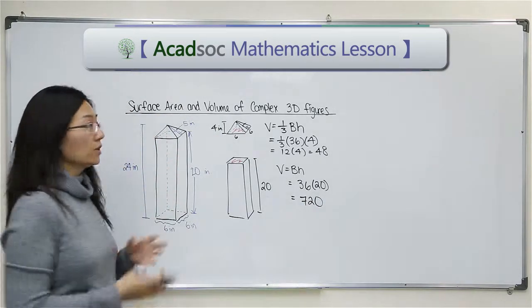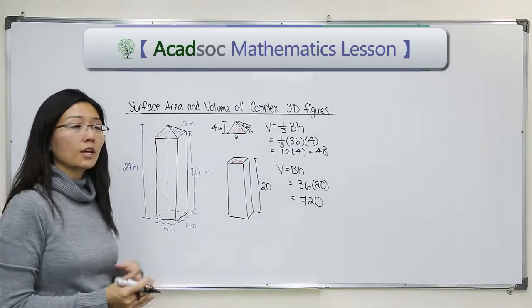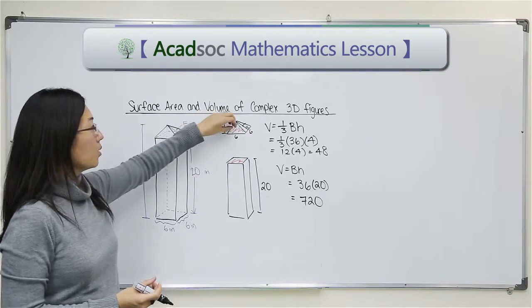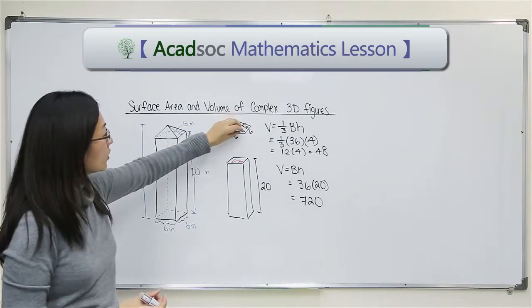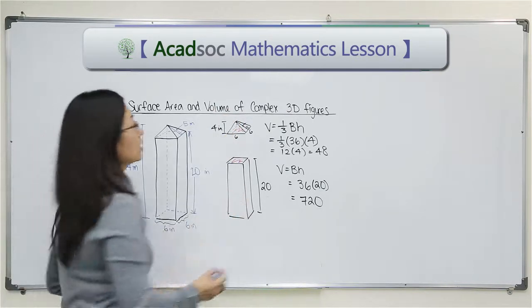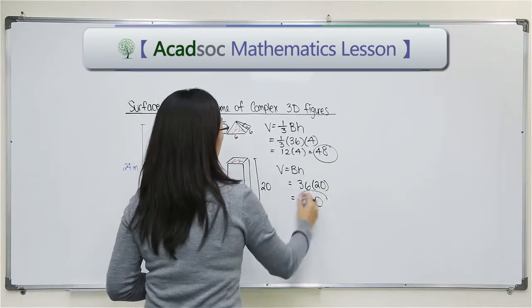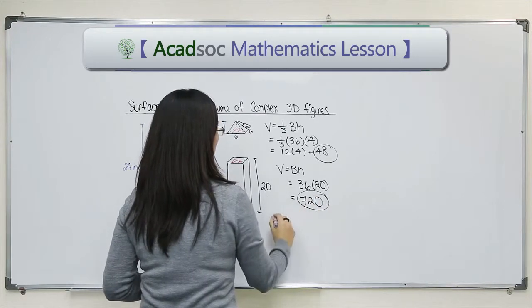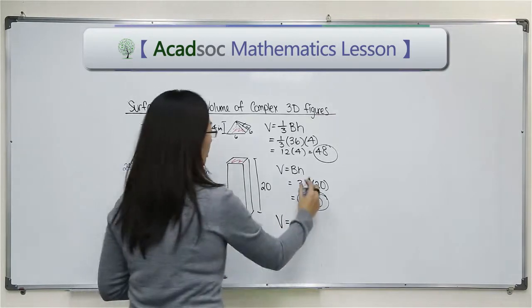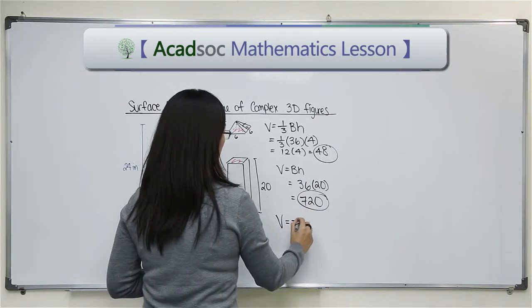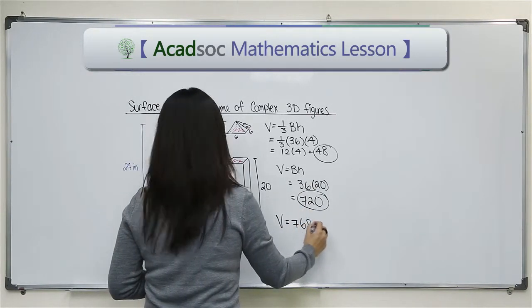And now for volume, I don't need to subtract anything or take anything out because volume simply means how much space it contains inside that monument. So we have to count every space inside the pyramid and also the prism. So I just have to add 48 with 720. So the total volume of this three-dimensional figure would be 768 inches cubed.